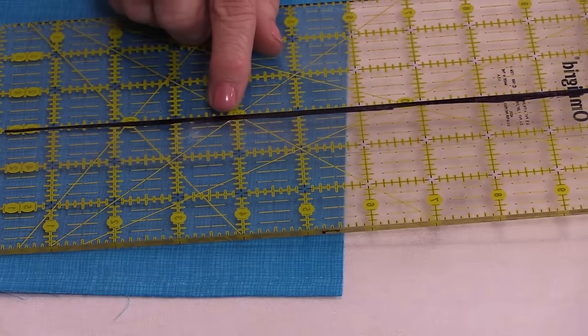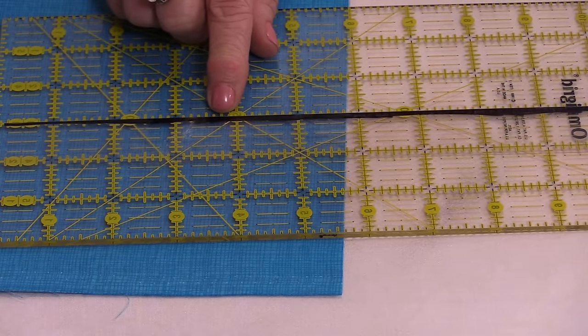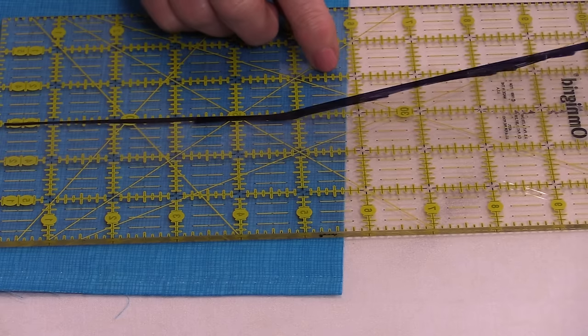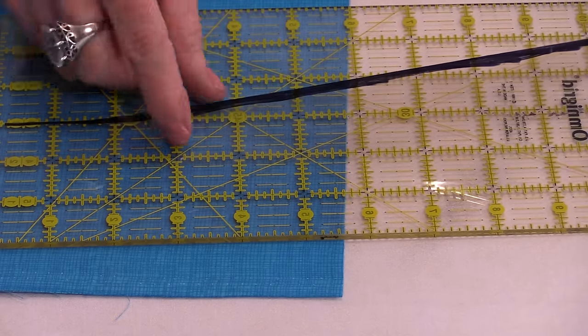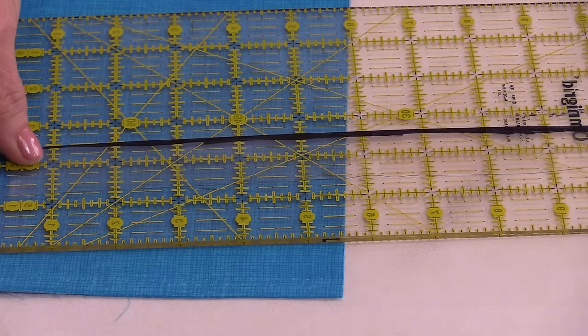Now what's really great about this tape? It's repositionable. So if my next cut is going to be at 3½, I can take the tape off and move it to the 3½-inch mark. You could do one of these for each of your rulers.